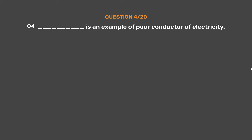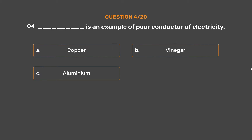Question No. 4: Underscore is an example of a poor conductor of electricity. Option A: Copper. Option B: Vinegar. Option C: Aluminium. Option D: Wood.